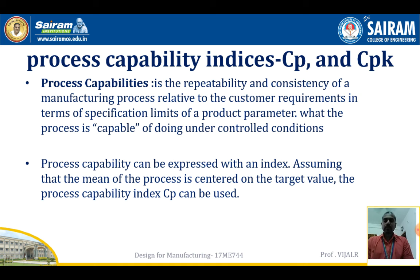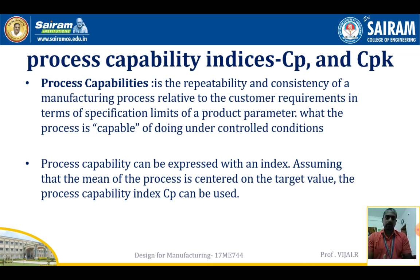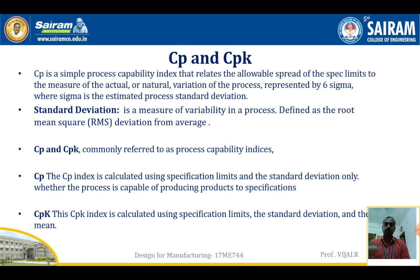Process capability is the repeatability and consistency of a manufacturing process relative to customer requirements. Repeatability means that when you perform the process multiple times, it maintains the same output. We call this the ability of the process to maintain its limits under control. Process capability is expressed with an index — we call it Cp and Cpk.